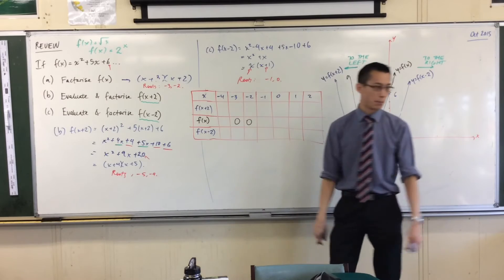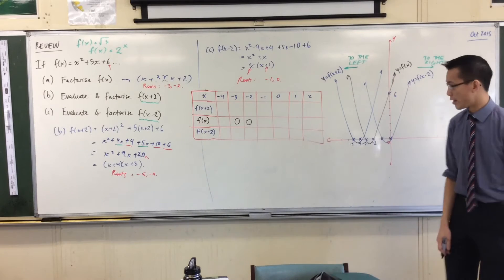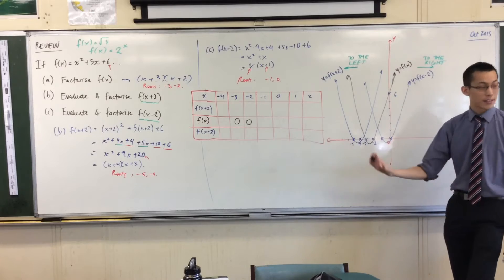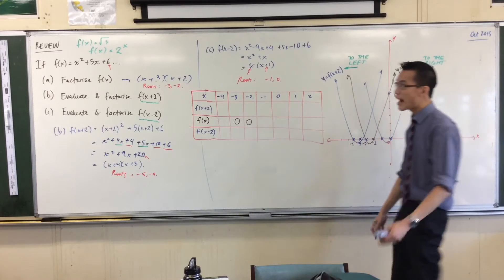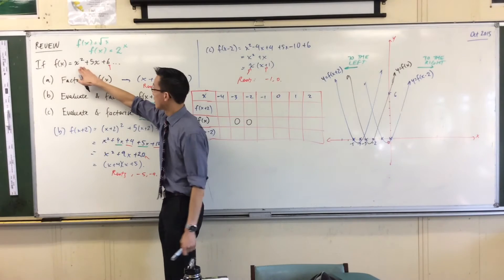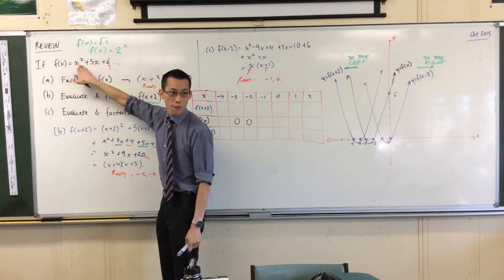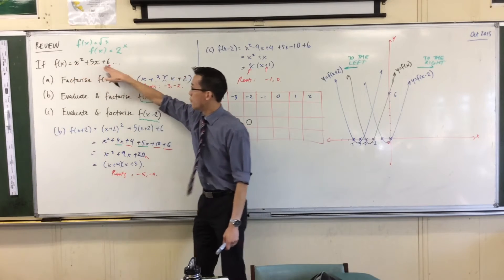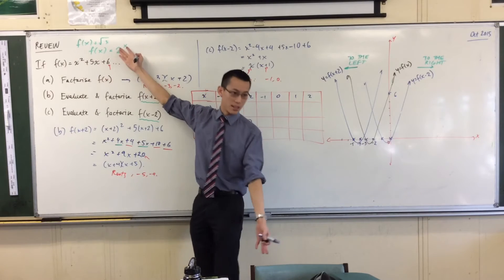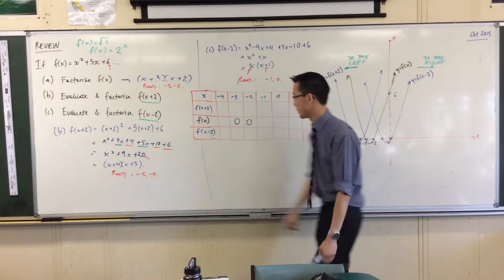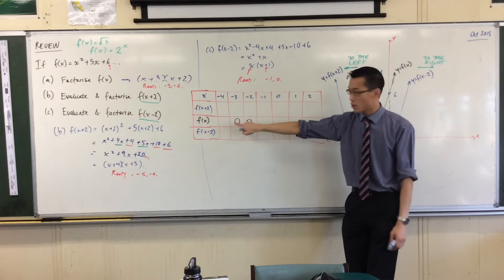So therefore, without any calculation, I'm just going to put those in, okay? f of x is equal to 0 in both those cases. And if you like, you can go ahead, you can put in minus 2 in here for instance. Negative 2 is going to become 4 minus 10 plus 6 and it comes out to 0. You can do the same with negative 3, okay? So you've got a pair of zeros there.